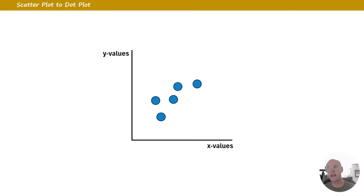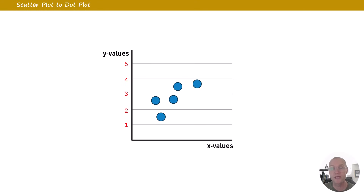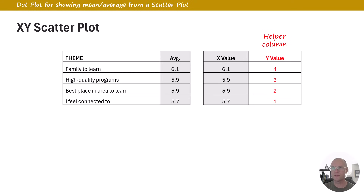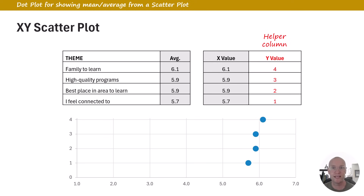Scatter plots plot a data point based on two values — an X value and a Y value. What we're going to do is take that scatter plot and make a dot plot by making the Y values just sequential numbers along the lines: 1, 2, 3, 4, 5. Those become my Y values, and the X values are my horizontal data values. This is how your data would look, and here's how you'd set it up in the XY scatter plot: X value is your data value, and Y value is that helper column of sequential data — 4, 3, 2, 1, however many plots you have.